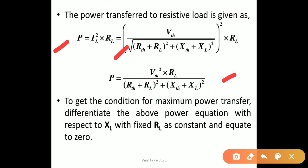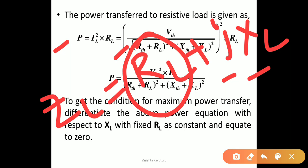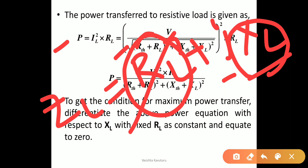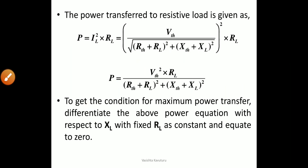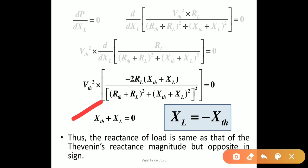With RL fixed as a constant, set dP/dXL = 0. The load impedance ZL consists of two terms: RL and jXL. We do two derivations: first fixing RL and varying XL, then fixing XL and varying RL, to calculate the nature of the resistive and reactive parts. From dP/dXL = 0, we get XTH + XL = 0, so XL = −XTH. This means the reactance of the load has the same magnitude as the Thevenin reactance but opposite in sign.